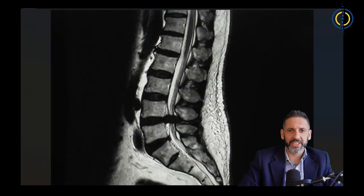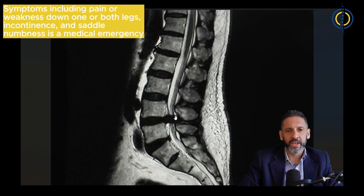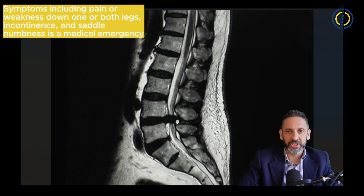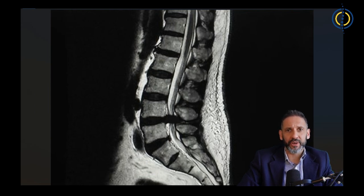You would jump ahead to surgery and skip the other steps if the disc herniation is so big it's trapping all of the nerves in the spine, causing pain down both legs, urinary symptoms such as incontinence or retention — unable to pass urine — and saddle numbness, because that's a medical emergency and our job is to try and protect those nerves and give them the best chance of recovery. The same also goes if you develop weakness in one of the legs — we're trying to regain that function and give you the best chance of recovering it, and that's when I'll jump to surgery as early as possible.